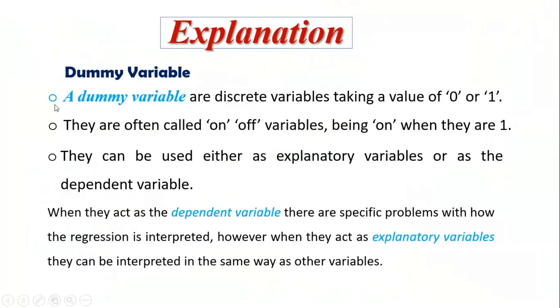Dummy variables are discrete variables taking a value of zero or one. They are often called on or off variables, being on when they are one and off when they are zero. Zero is the baseline or reference category.